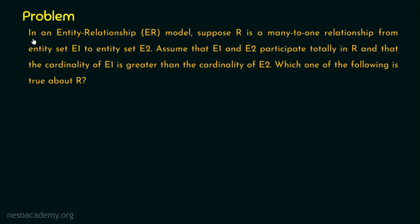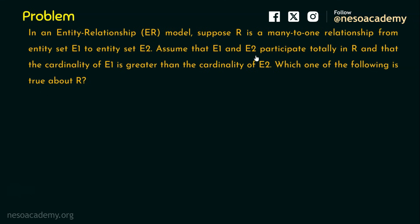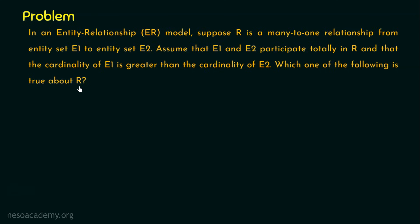The question is: in an entity relationship ER model, suppose R is a many-to-one relationship from entity set E1 to entity set E2. Assume that E1 and E2 participate totally in the relationship R, and that the cardinality of E1 is greater than the cardinality of E2. Which one of the following is true about R? This question was asked in GATE Computer Science in the year 2018.